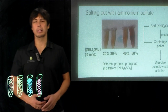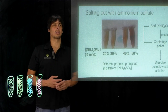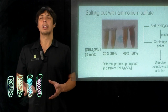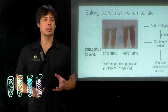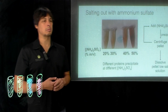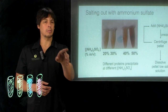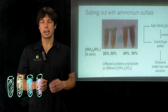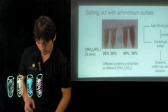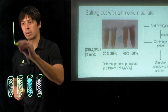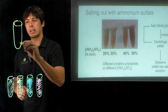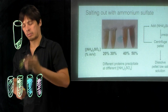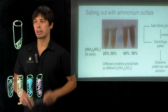The first method we'll talk about is called salting out. Typically, you add salt to your cell lysate, and this causes precipitation of proteins. The salt generally used for this method is ammonium sulfate — here's the chemical formula. The general process is to add salt to your fraction or cell lysate, then centrifuge. You get a pellet and a supernatant.